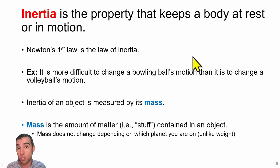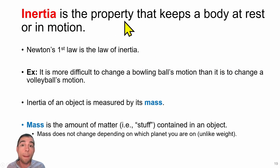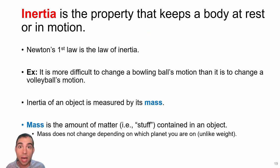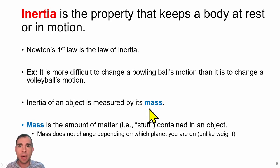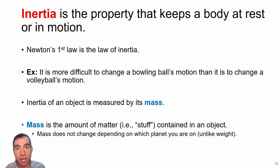Newton's first law is often called the law of inertia, because inertia is the property that keeps a body at rest or in motion. The more inertia an object has, the harder it is to get moving or to slow down. Inertia is associated with the mass of an object — you can imagine a boulder that's really hard to get moving, but once it's moving it will keep moving for a long time.